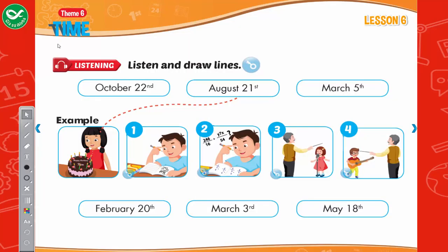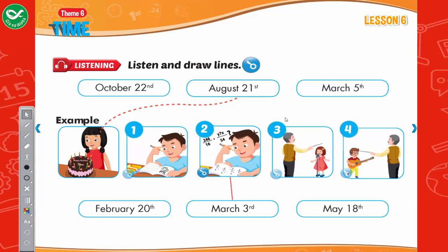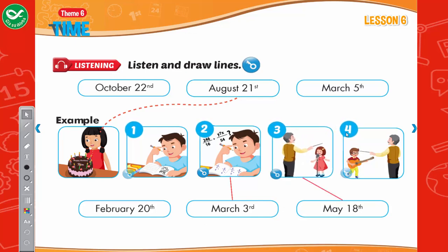Listening. Listen and draw lines. Two: When's the math test? Is that on March 5th? No, it's on March 3rd. March 3rd? That's next week. We have to study hard. Three: When's your singing practice? It's on May 18th. May 18th? That's next weekend. Can I go? Sure, you can sing too. Four: When's your guitar practice? It's on October 22nd. October 22nd? Yes, that's right. Now listen again.